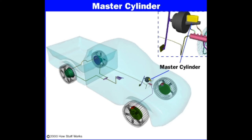Fourth, the returning springs: in a tandem MC, two returning springs are used — one with the primary piston and one with the secondary piston. Fifth, the valves: in a tandem master cylinder, as it is a dual circuit MC, two inlet and two outlet valves are used.